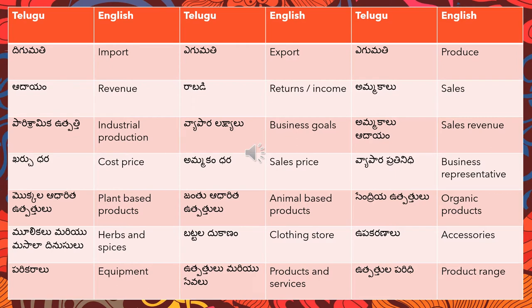Let's start with the vocabulary video for English to Telugu. The first word is 'digumati,' which means import. When you come across the word 'import' in your dialogue, you will have to use the translation 'digumati.' The next word is 'egumati,' that is export. The reason we try to find these words and use the exact translation is because if you use 'export' or 'import' as-is in your dialogue, it will lead to reduction of marks.